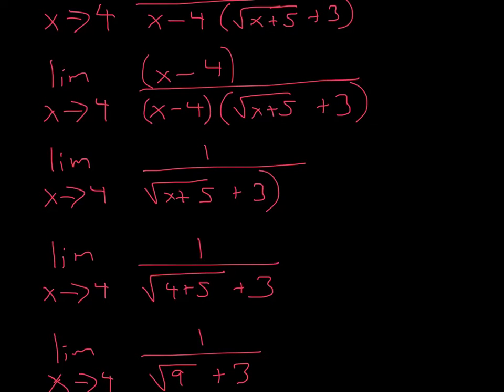Try to remember this. This is an easy mistake. People will cancel this and just leave it as this. Remember, on the top, there's always an invisible 1. If this is multiplied by 1, it's still the same thing. So even if you cancel it, you're left with a 1 on top. So that's an easy mistake to watch out for. So it's 1 over square root of x plus 5 plus 3, because both of these cancel out.